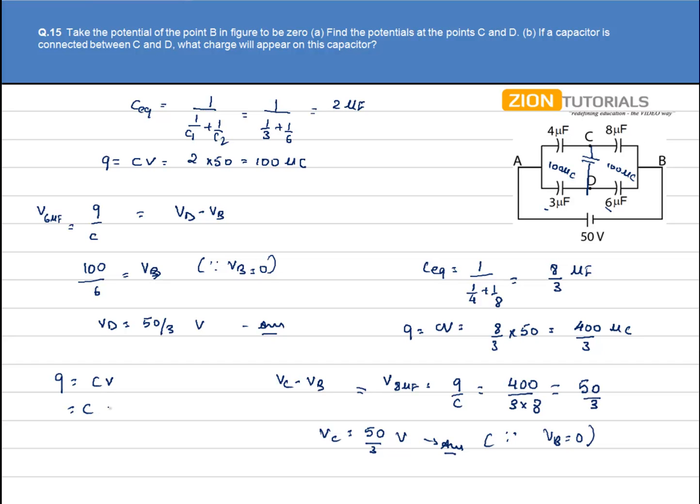V is the potential difference across the capacitor that is potential at C minus potential at D. That comes out to be zero since Vc is equal to Vd. Hence, no charge will appear on the capacitor.